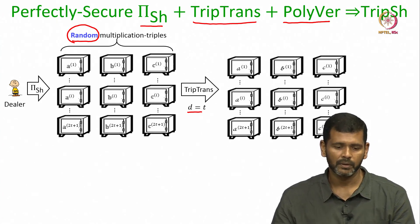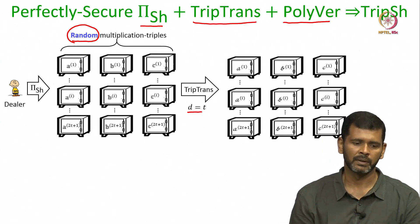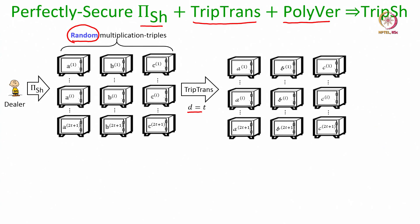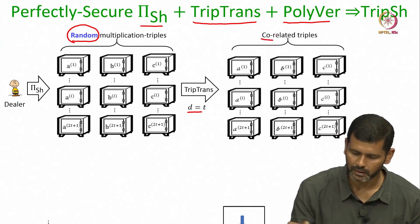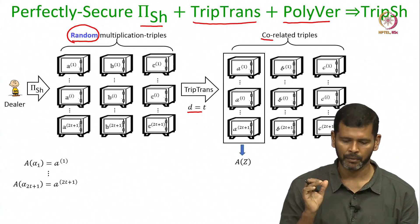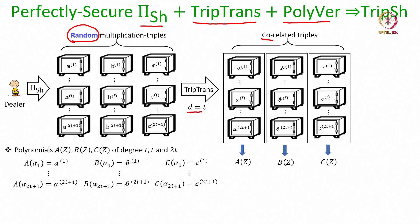We apply the triple transformation protocol on the set of secret shared triplets of the dealer. As a result, the parties will now have 2t plus 1 number of secret shared triplets, and they are correlated in the sense that there will be a t-degree A polynomial, a t-degree B polynomial, and a 2t-degree C polynomial, such that the A components of all the transformed triplets lie on the A polynomial, the B components lie on the B polynomial, and the C components lie on the C polynomial.